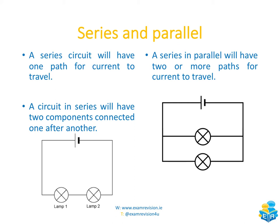In a series circuit there is only one path for the current to travel — current flows through lamp one, then lamp two, with no alternatives. In a parallel circuit there are two or more paths for current to travel. At a junction, the current can go through lamp one or continue down through lamp two before returning to the start. The key difference is: series has one path, parallel has two or more.